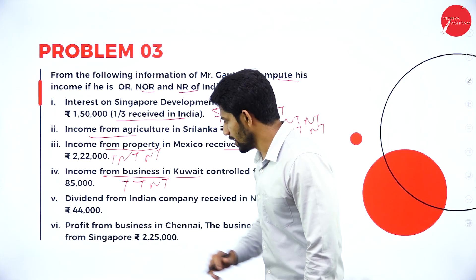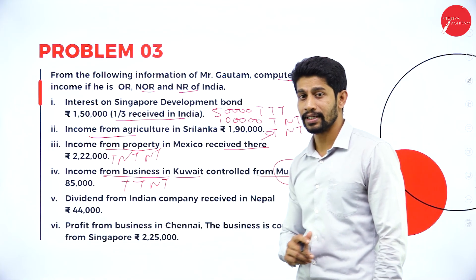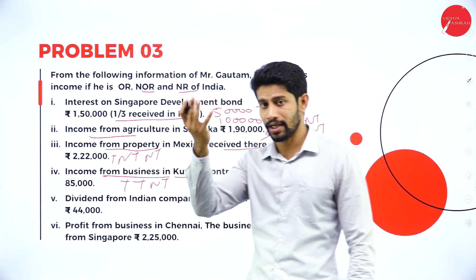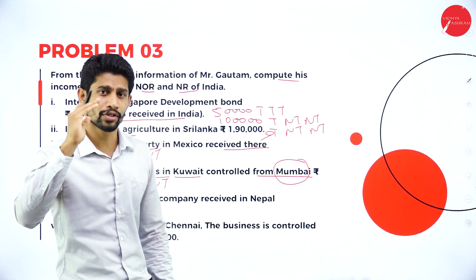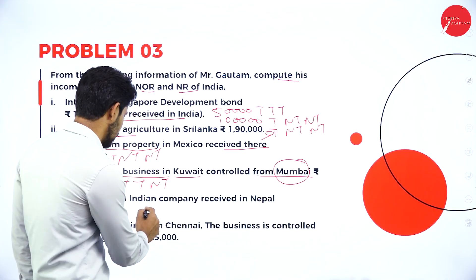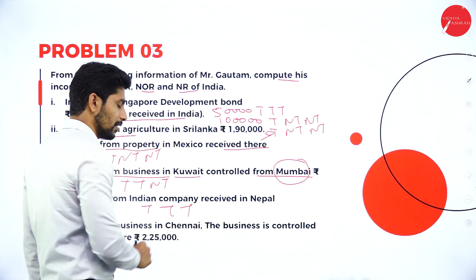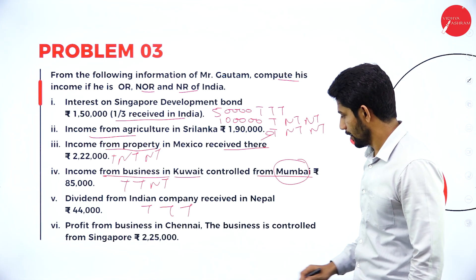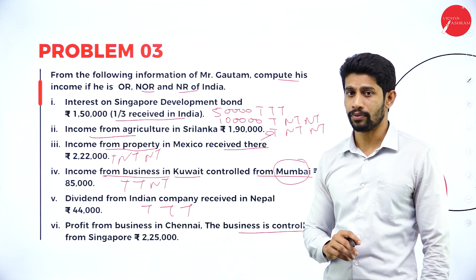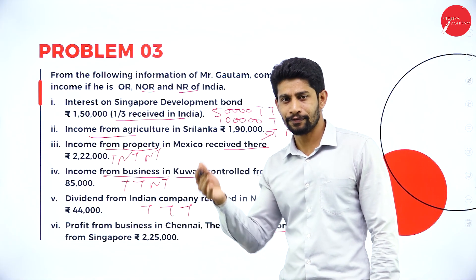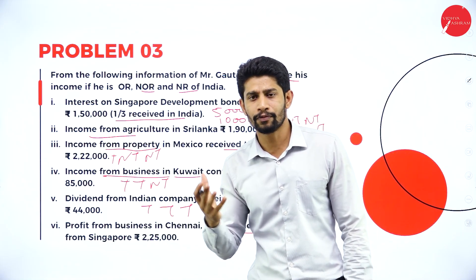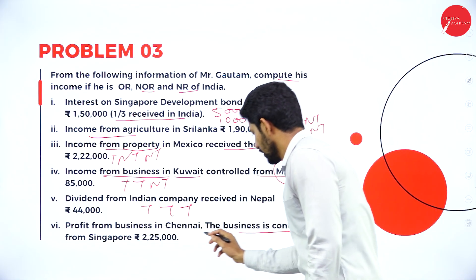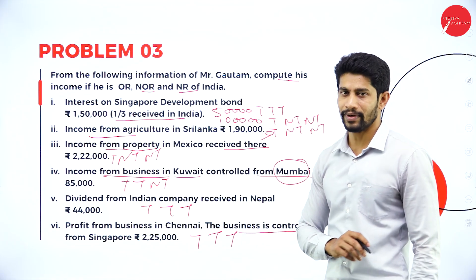Next: dividend from Indian company received in Nepal. If the company is in India, income is generated in India. Any income accrued, arisen, generated or received in India — treatment is taxable, taxable, taxable. Next: profit from business in Chennai but controlled from Singapore. The business is in India itself, so income is generated in India — we need not worry about where it is controlled. Treatment is taxable, taxable, taxable.